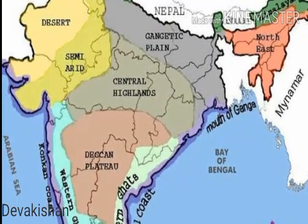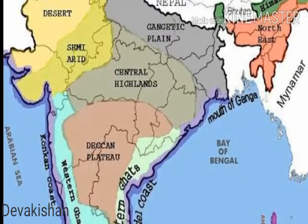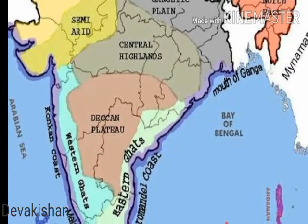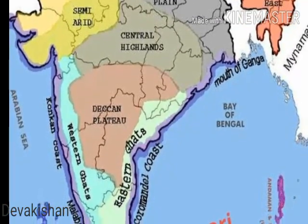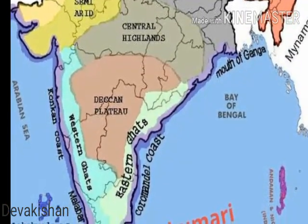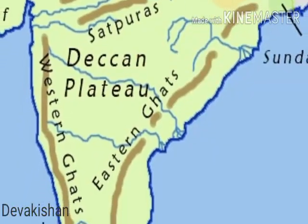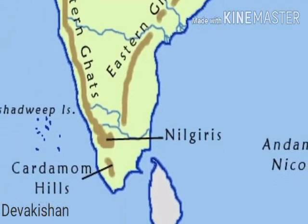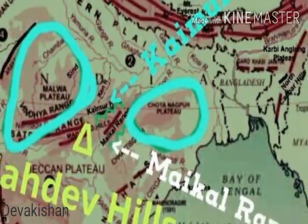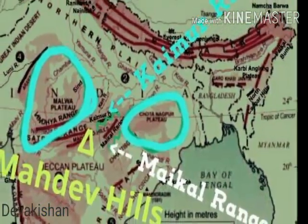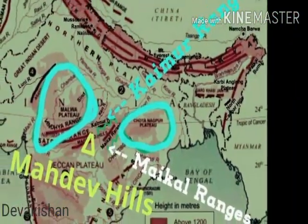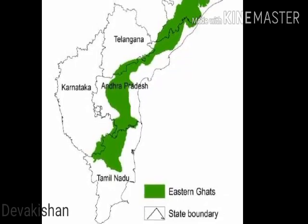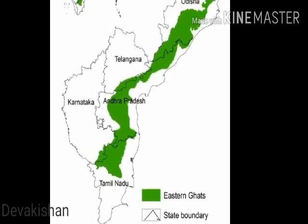A triangular landmass lying to the south of Narmada is called the Deccan Plateau. Its boundaries are: North — the Satpura Range; South — the Nilgiris; East — the Mahadev, Kaimur Range, a portion of the Maikal Range, and the Eastern Ghats; West — the Western Ghats.